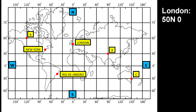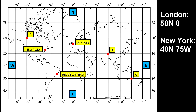If we look at the second example of New York: New York is north of the equator for latitude and west of the prime meridian. So New York is around 40 degrees north and 75 degrees west.